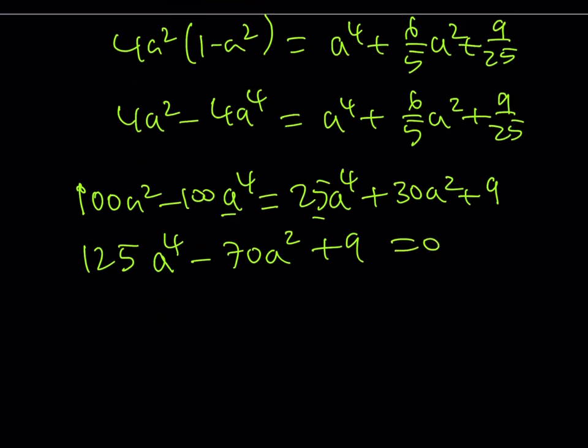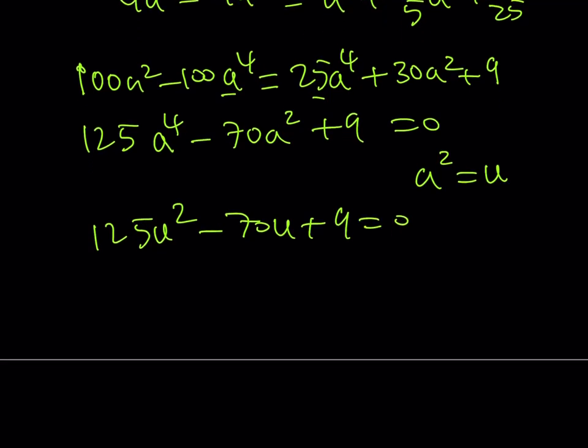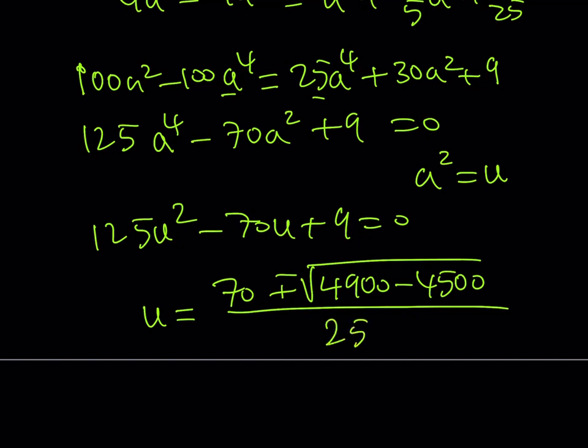Now, if you do a little substitution here, call A squared U, you should be getting 125 U squared minus 70 U plus 9 equals 0. And if you go ahead and use the quadratic formula for this one, you could probably factor it too, but I'm just going to use the quadratic. Negative B plus minus the square root of B squared, so it's going to be 4,900 minus 4AC, that's going to give us 4,500. And then this is going to be 250.